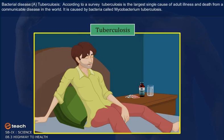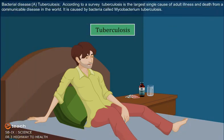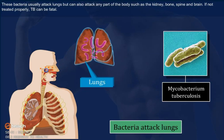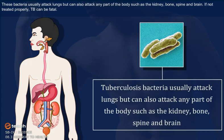Bacterial Disease: Tuberculosis. According to a survey, tuberculosis is the largest single cause of adult illness and death from a communicable disease in the world. It is caused by bacteria called Mycobacterium tuberculosis. These bacteria usually attack the lungs but can also attack any part of the body such as the kidney, bone, spine and brain. If not treated properly, TB can be fatal.